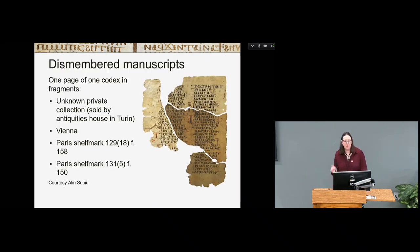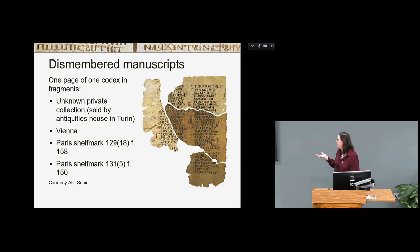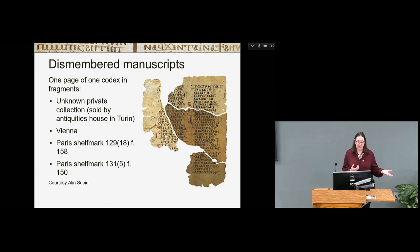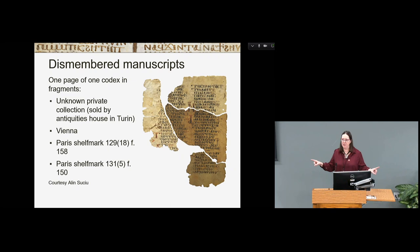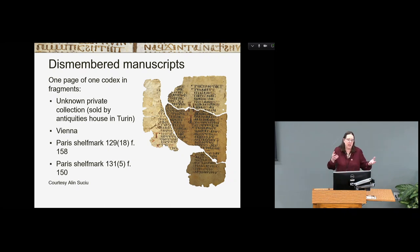What this means is you will have historical works that are in fragments all over the world. This is the most egregious example: one page that is in four different places — one of which is a private collection, Vienna, Paris, but two different shelf marks in Paris — so they're not even together. This is the worst case scenario, but still you might have one work that is in two, three, four different places in the world.